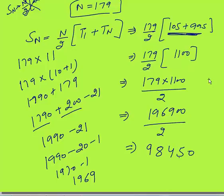Dividing 196900 by 2: the answer is 98450. That is what I was saying — your calculation and simplification speed must be fast, and that will give you a good advantage over other students.